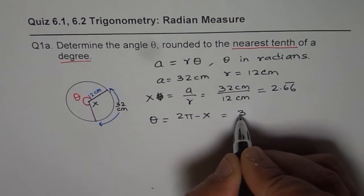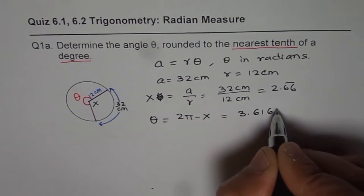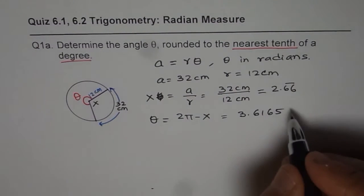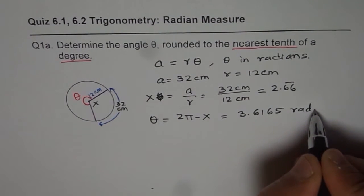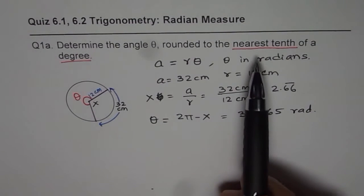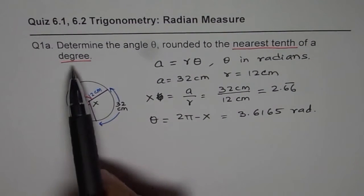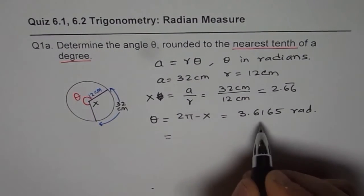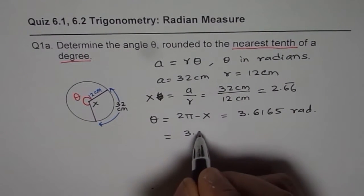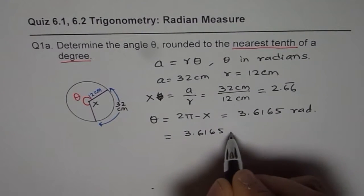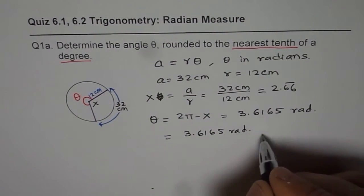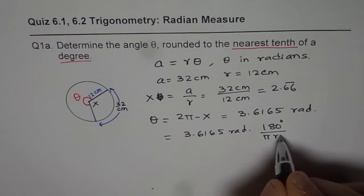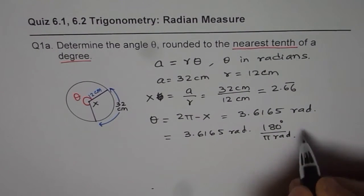as our answer as far as radians are concerned. This is in radians actually. But we need to find to the nearest tenth of a degree. To find theta in degrees, what should you do? You have to do 3.6165 radians, multiply by 180 degrees divided by π radians to get the exact answer.